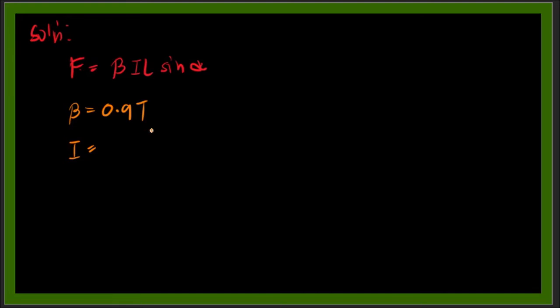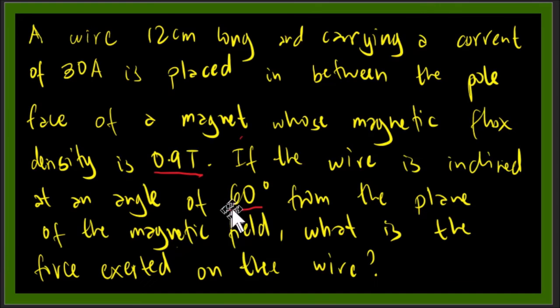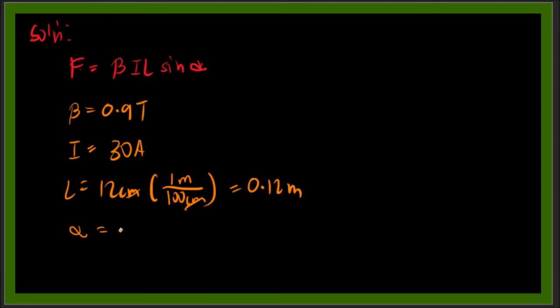Our current is 30 amperes. Our length is 12 cm, so we need to convert that to meters. That is 12 over 100, which equals 0.12 meters. And our angle is 60 degrees.